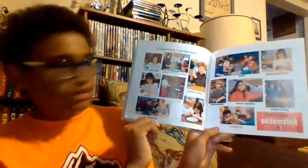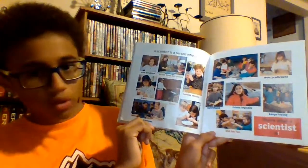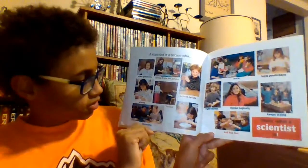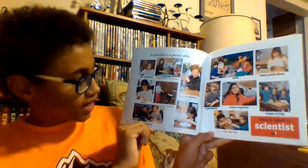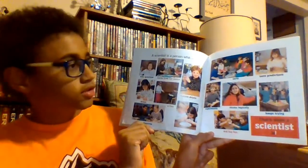A scientist is a person who asks questions, learns from her senses, notices details, draws, writes, measures, counts, sorts, tests predictions, experiments, thinks logically, keeps trying, and has fun. That's what a scientist is.